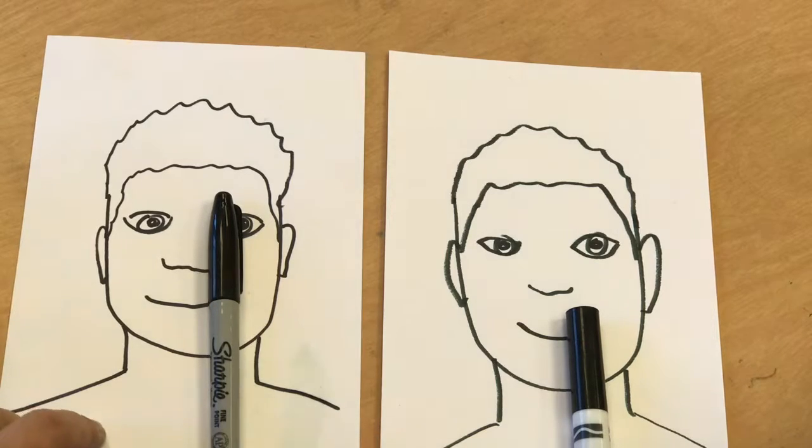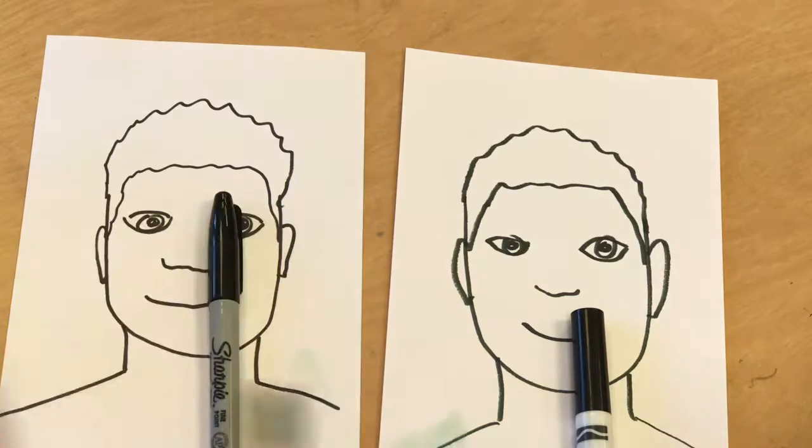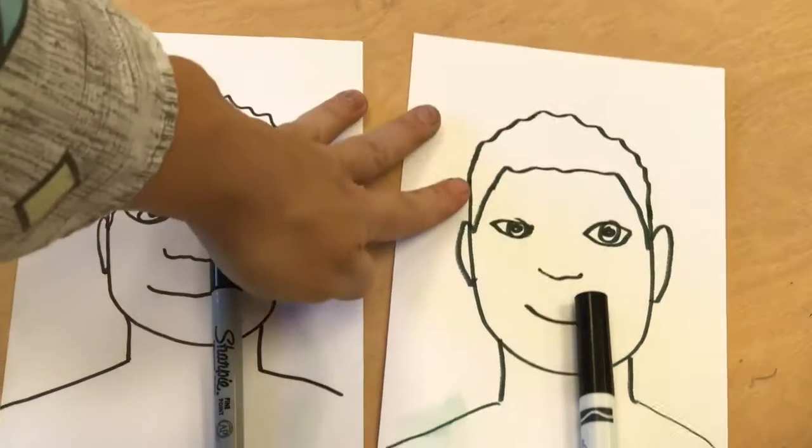So I used a Sharpie marker on the left hand side and just a Crayola marker on the right hand side. Which one is colorfast?